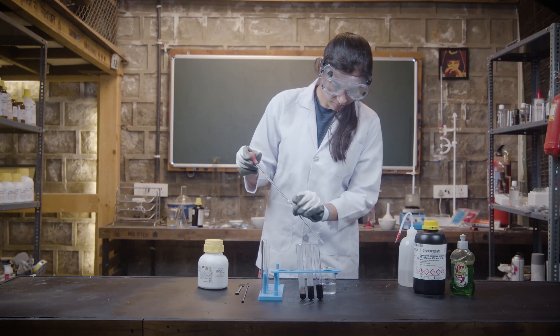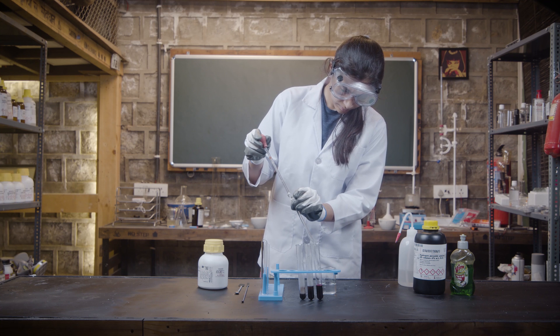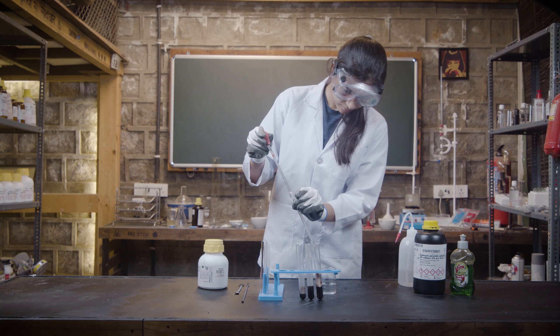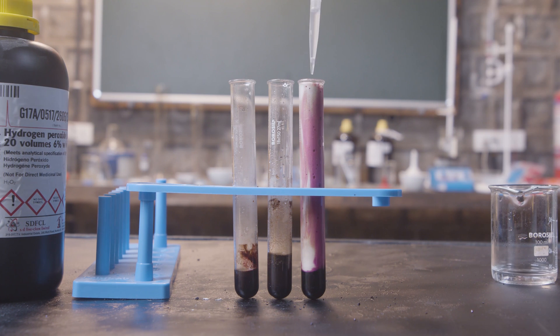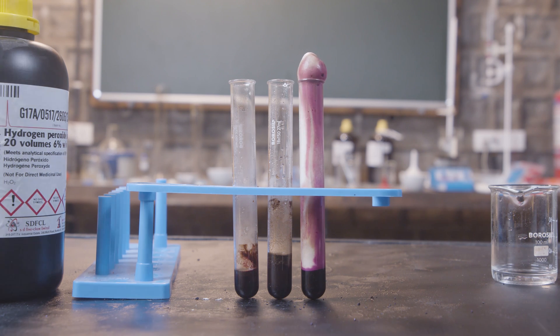Now, in the last tube, which has the dishwasher soap, repeat the same process of putting hydrogen peroxide in it. Do you see how the mixture turns into a purple foam and rises up? This is so weird, but it's pretty cool.